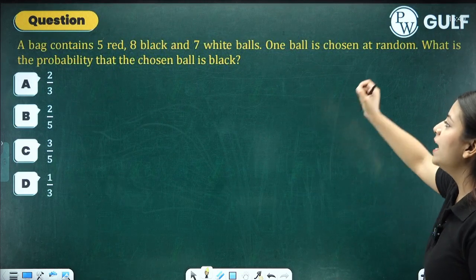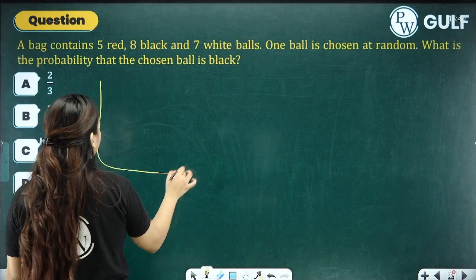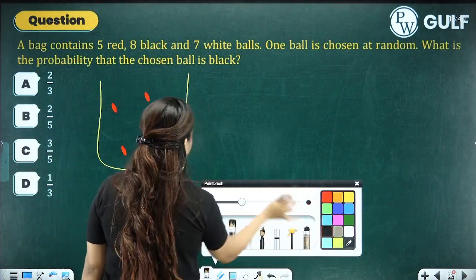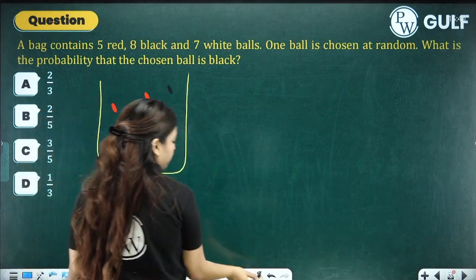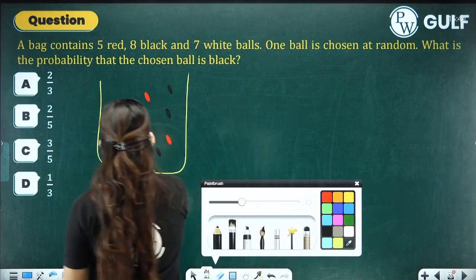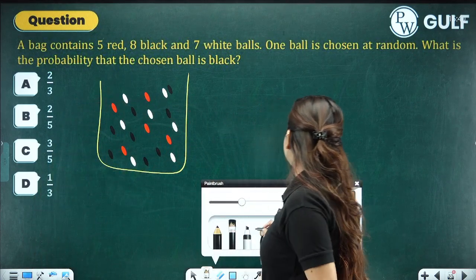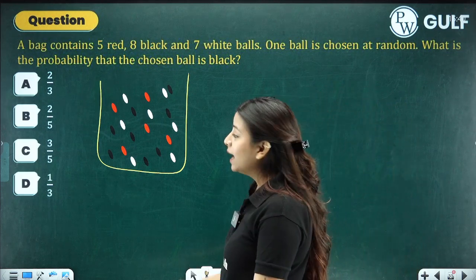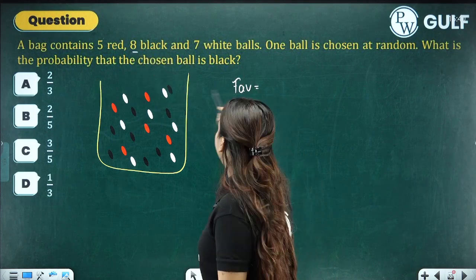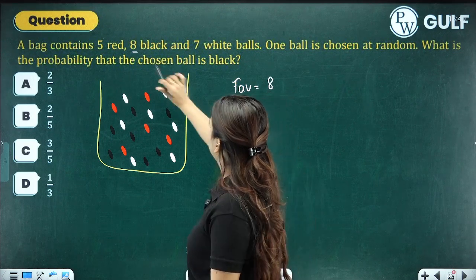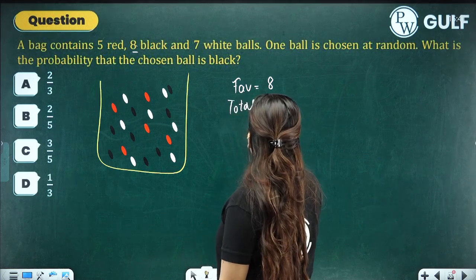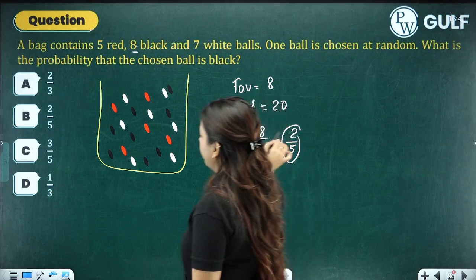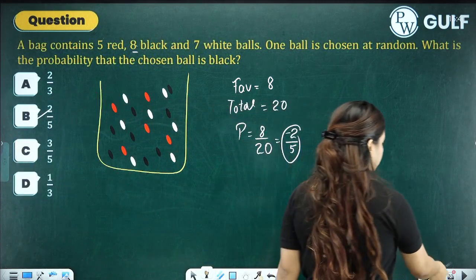A bag contains 5 red, 8 black, and 7 white balls. One ball is chosen at random. What is the probability the chosen ball is black? Favourable outcome for black = 8. Total number of balls = 5 + 8 + 7 = 20. Probability = 8/20 = 2/5. Option B is the correct answer.